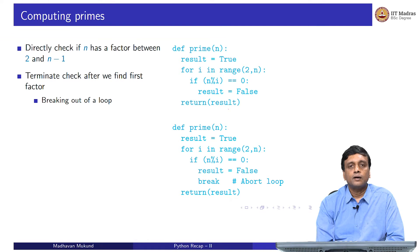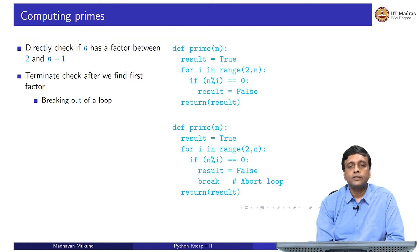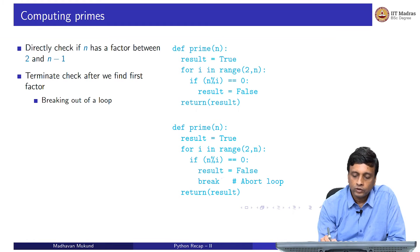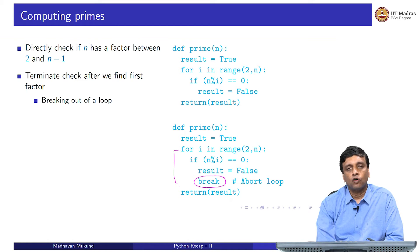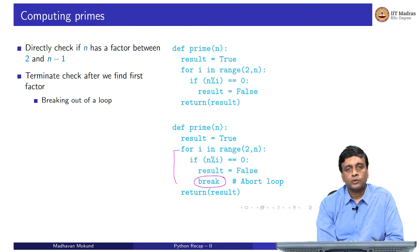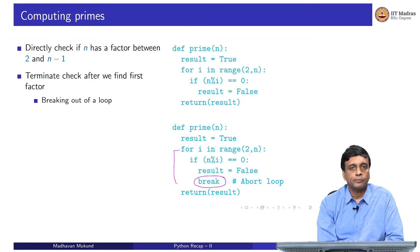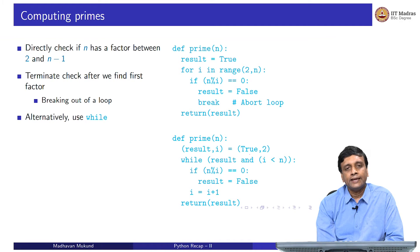A non-prime number will have many factors, so there is no point continuing once we have found the first one. We can terminate the loop early using break. The break statement breaks out of the loop the moment we find some i between 2 and n-1 that sets result to false. However, breaking out of a loop can lead to confusion, so you should use break with caution.